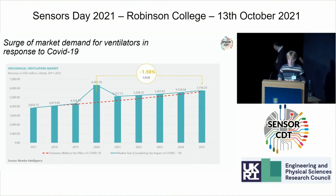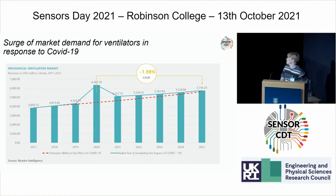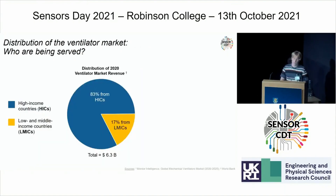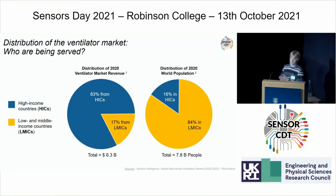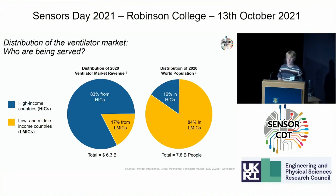Looking at the ventilator market generally, projections show that from 2017 to 2019 the market was steadily rising. There was a huge spike in 2020 due to COVID-19, expected to come back down to the general trend line projected to 2025. But what's the actual distribution of this market? 83% of ventilator market revenue is coming from high-income countries. This is vastly different from the actual distribution of world population — 16% live in high-income countries while 84% live in low- and middle-income countries.